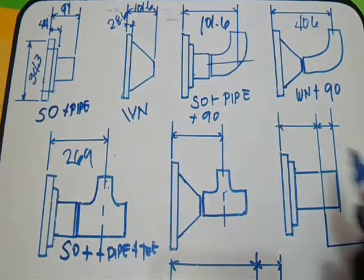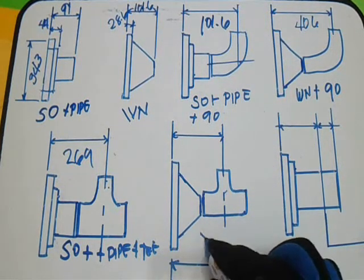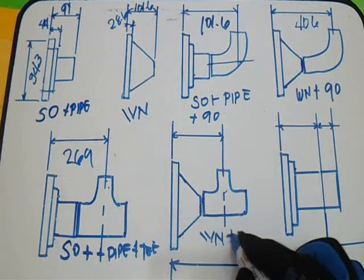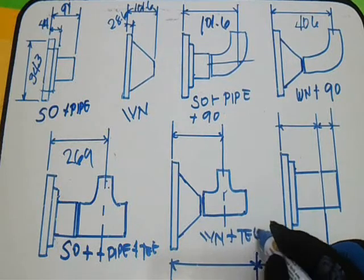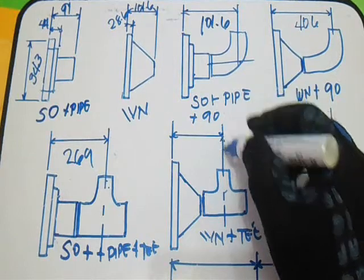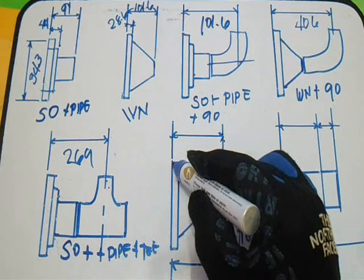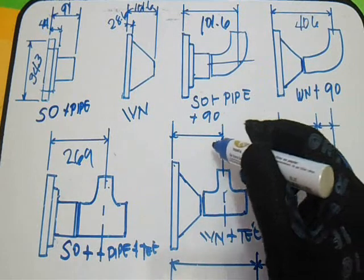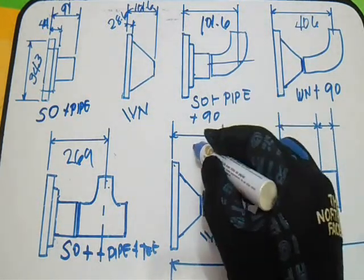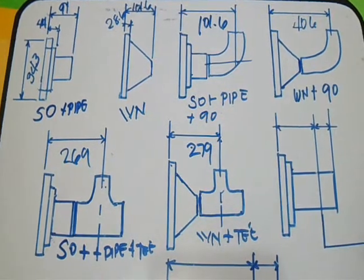Next, weld neck flange (WN plus tee). We have a dimension here from center of tee to the weld neck flange, 279.